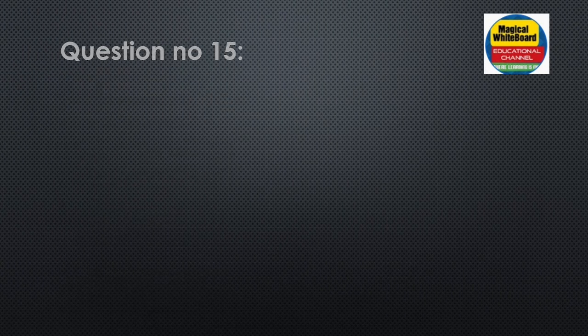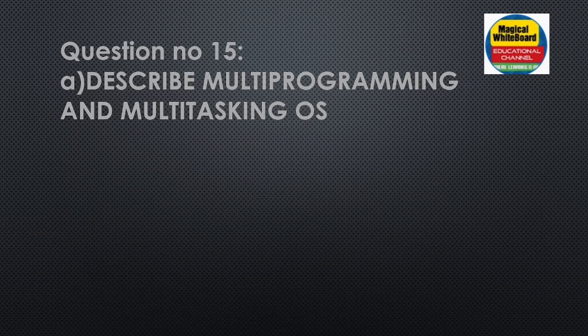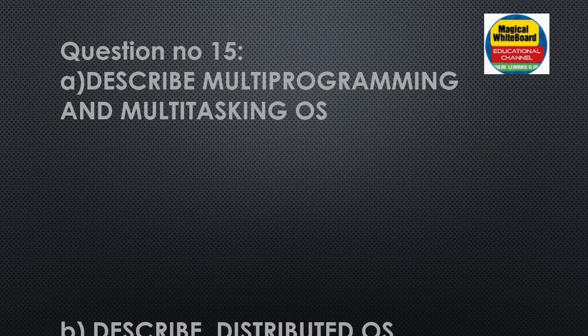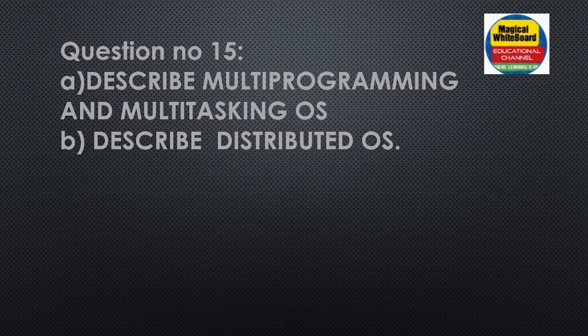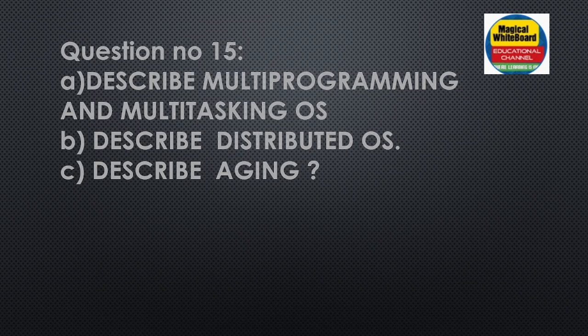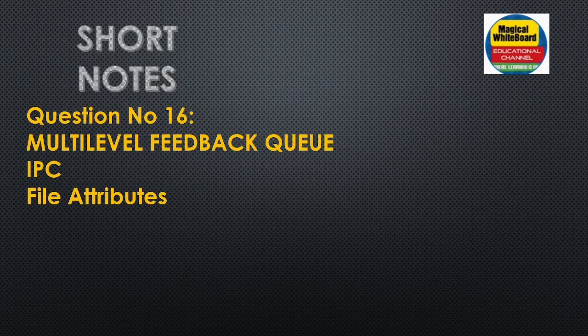Question number fifteen: multiprogramming and multitasking — different types and definitions. Distributed OS — short note on what is distributed OS. Aging — its definition and what is aging. Question number sixteen: multilevel feedback queue scheduling.